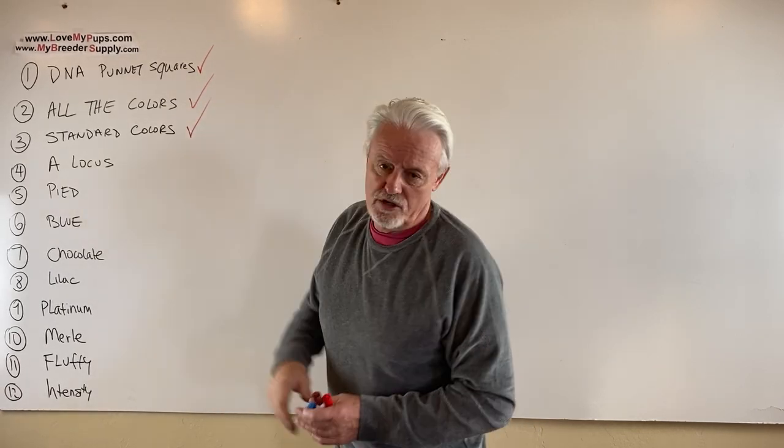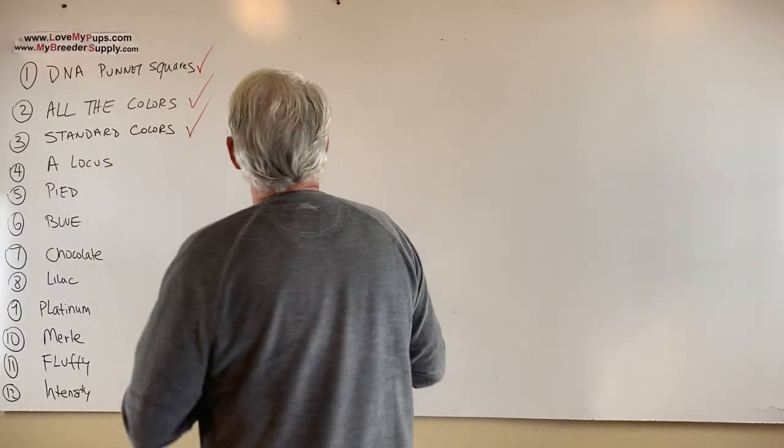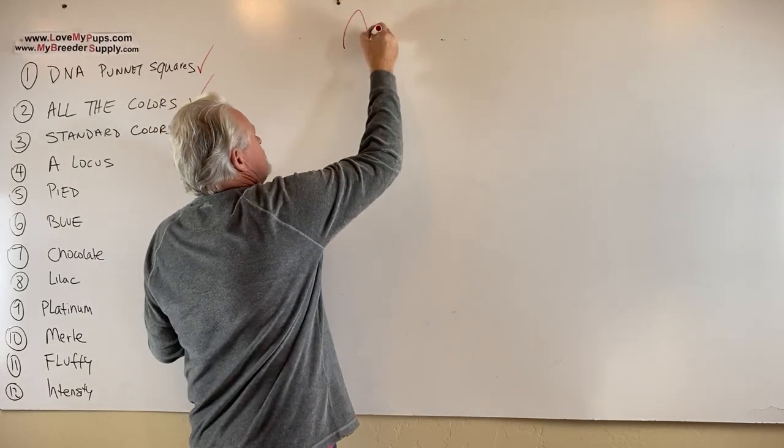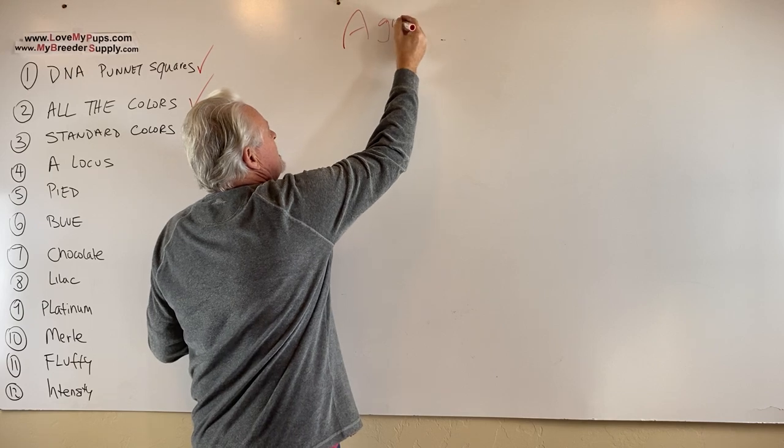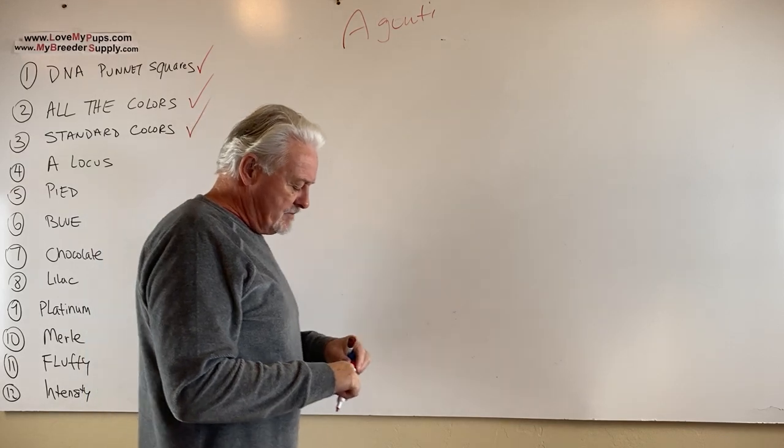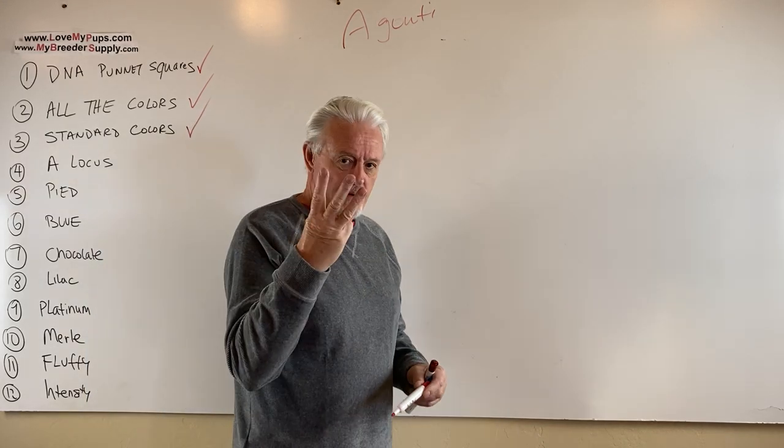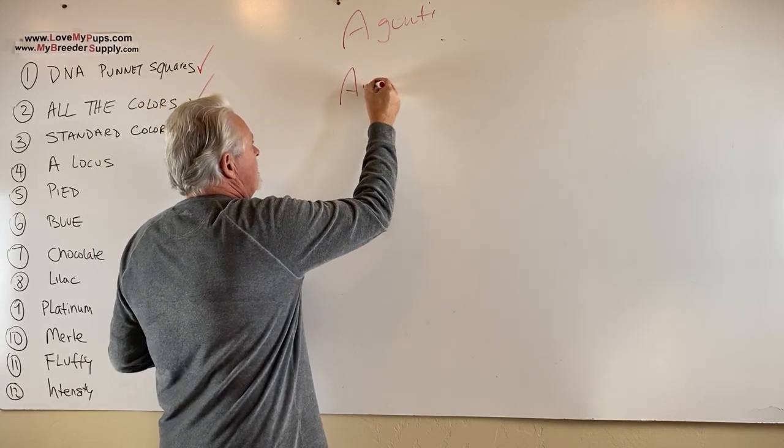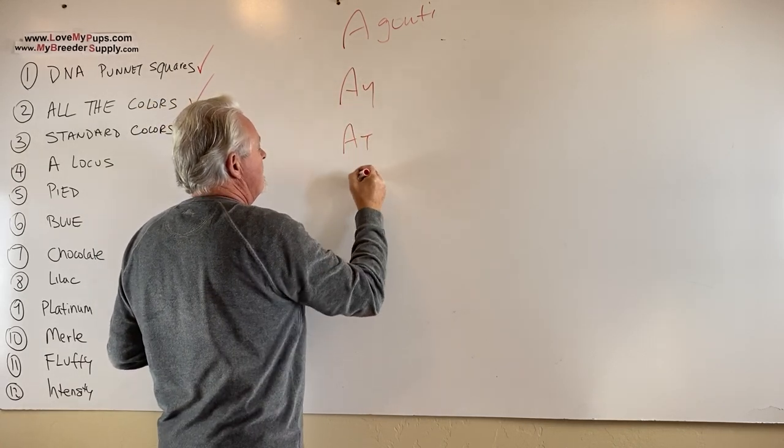Now we're going to talk about the A locus, the agouti locus. And I don't know why it says agouti, it's probably a French word, French Bulldog, I don't know. But there are three, so on this particular gene there are three possibilities. Those are in order: AY, AT, and A.